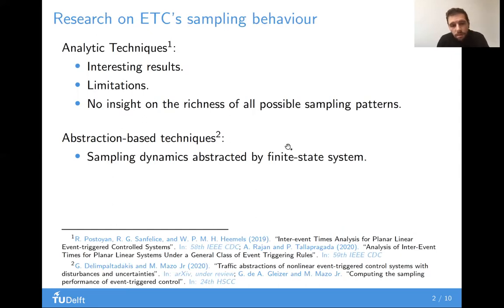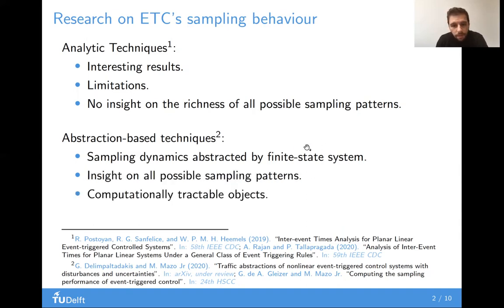On the other hand, there are abstraction-based techniques, which abstract the sampling behavior of ETC by finite-state systems. Through their traces, these finite-state systems do provide insight on all possible sampling patterns, and they actually constitute computationally tractable objects. So, by combining these two characteristics, we can assess and predict ETC's sampling performance.